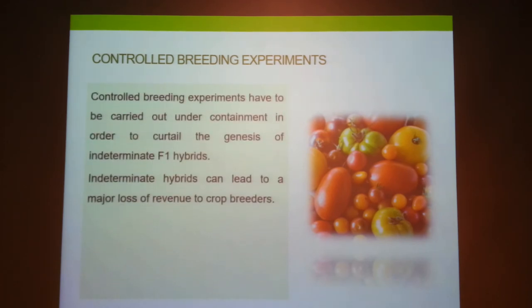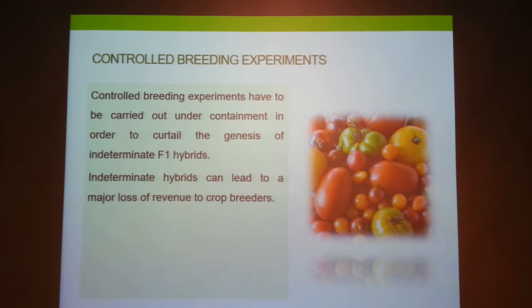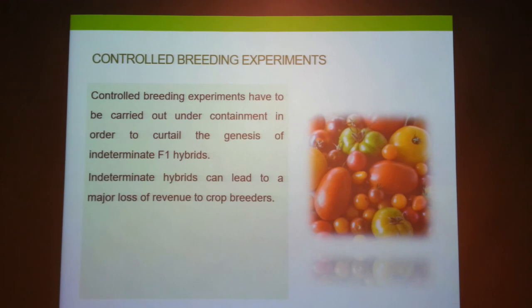For controlled breeding experiments, farmers sometimes want to develop determinate hybrids — where two pure parental genotypes are crossed to produce a hybrid. These experiments are done under containment because no other pollen is permitted to enter. Determinate hybrid crops are therefore expensive because they require extensive facility use during development. When an F1 determinate hybrid variety is advertised by a producer, it must contain germplasm from only the two original parents, which is why the farmer pays more and gets a uniform crop.